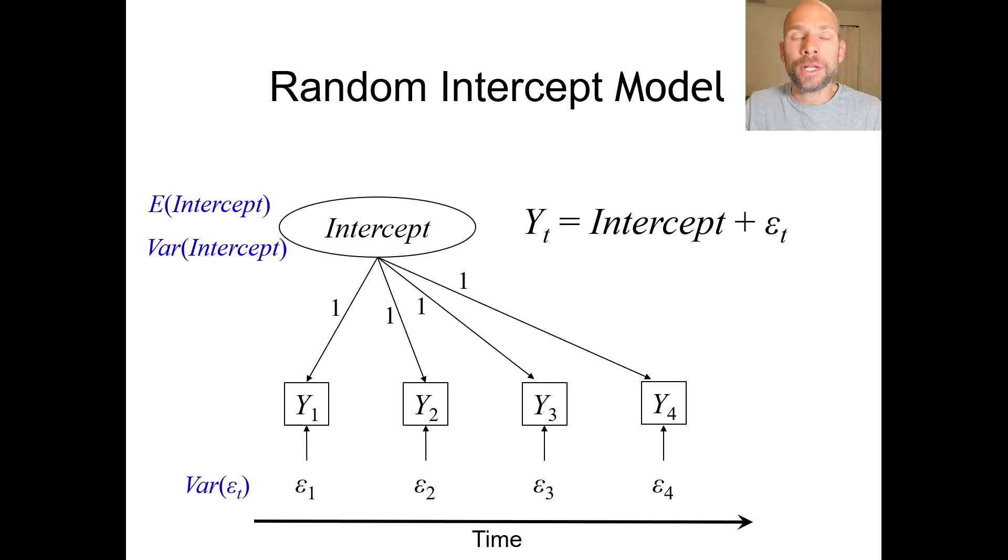Now, typically when we have a study where we expect changes across time, this random intercept model will not fit your data well, so you will reject it. And then the next step would be to think about what other longitudinal model you could examine that permits changes across time.